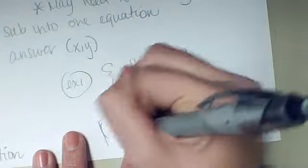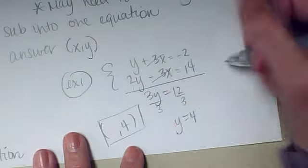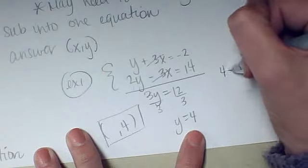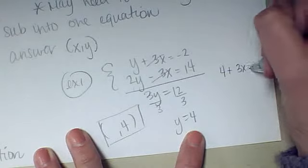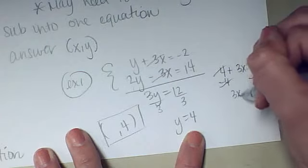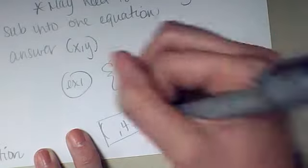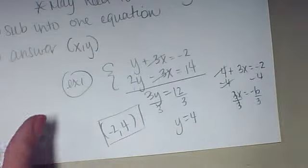So in my ordered pair my y value is going to be 4. My x value I can get by choosing one of these and plugging in for y. So instead of y I'm going to choose the first one and do 4. 4 plus 3x equals negative 2. 3x equals negative 6. Divide both sides by 3 and x equals negative 2. So I can get my ordered pair.